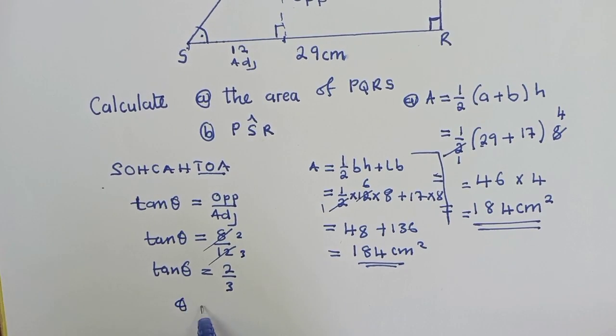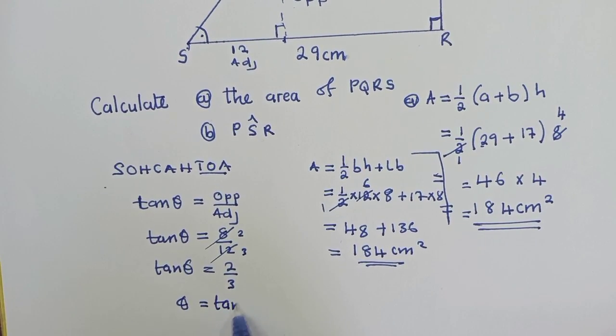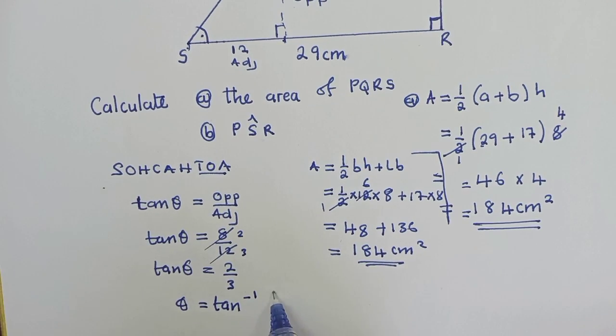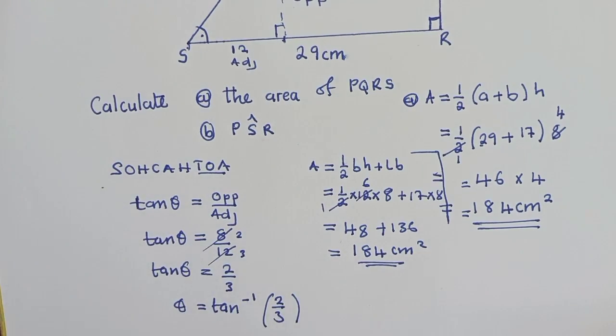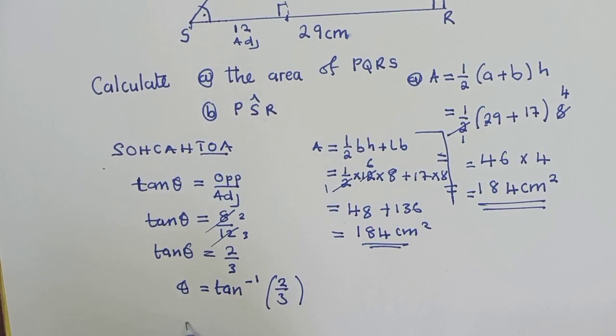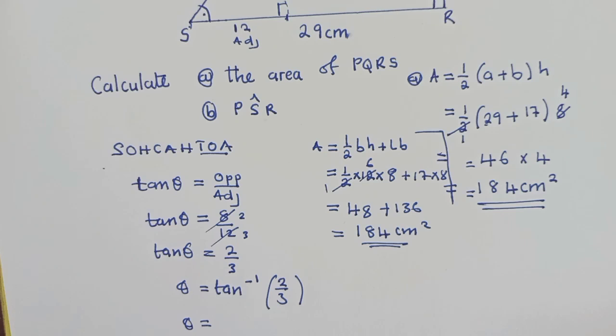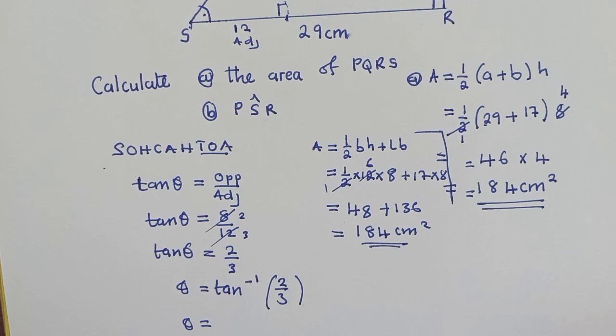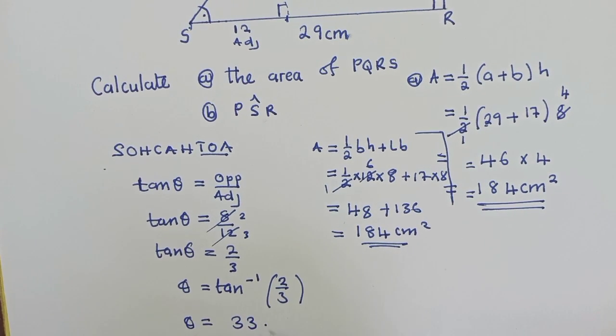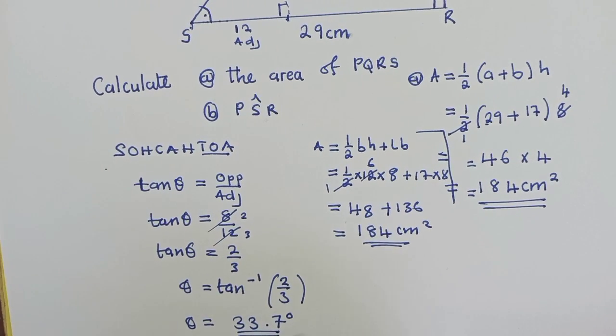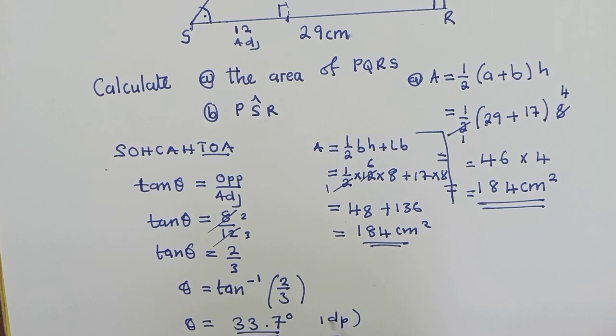Next, we calculate for theta. We find the tan inverse of this number, which is right here, or this fraction. So what is the tan inverse of 2/3? So you just press on your calculator tan inverse 2/3. You're getting 33.7 degrees. This is in one decimal place.